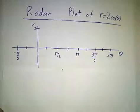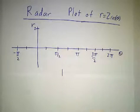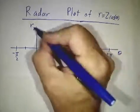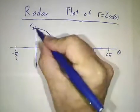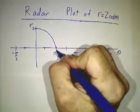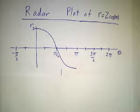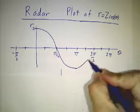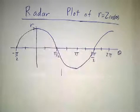So, let's start with the radar plot. Now, we know what r equals 2 cosine theta looks like as a function of r versus theta. It starts off at 2 and then by the time theta is pi over 2, it's 0. And then by the time theta is pi, it's down to negative 2, 0, plus 2. Great.